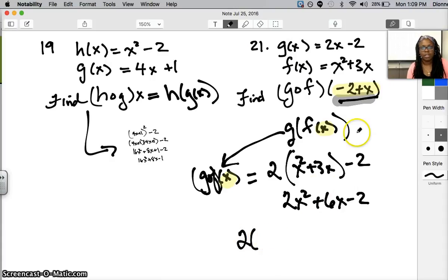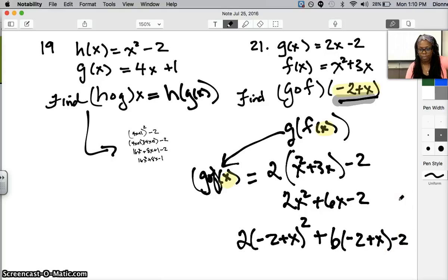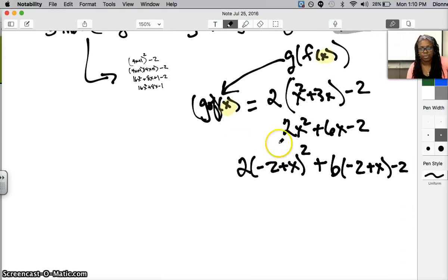2 times (-2 + x)² plus 6 times (-2 + x) minus 2. With a little bit of algebraic maneuvering, I should be able to do this fine. This is going to be another situation where I need to use the FOIL method. So this will really turn out to be 2 times (4 - 4x + x²). And then I'm going to distribute this 6 and I get minus 12 plus 6x, minus 2.